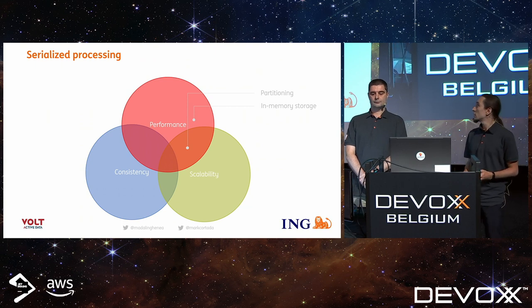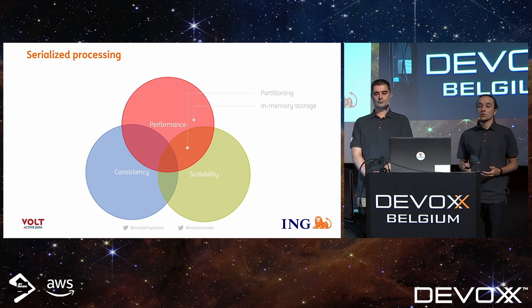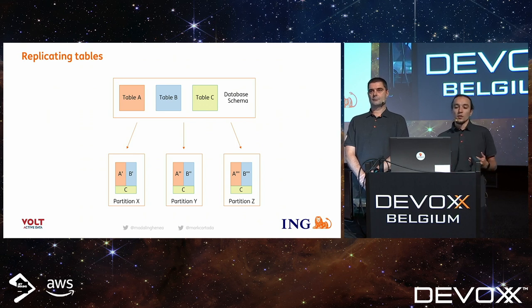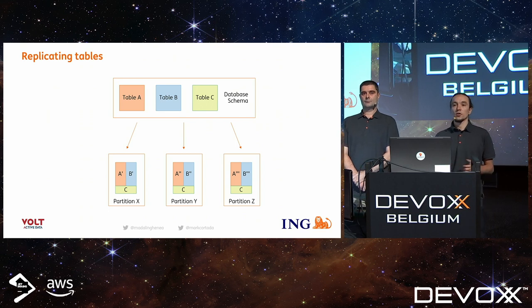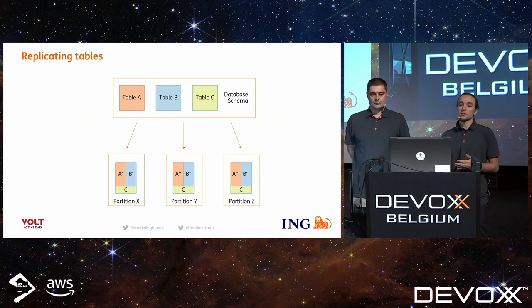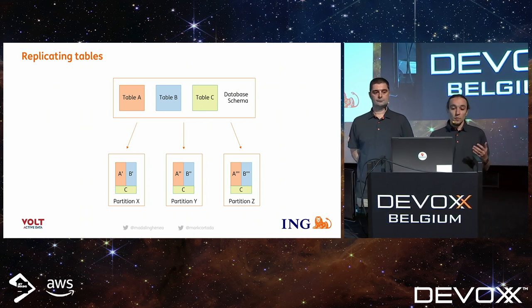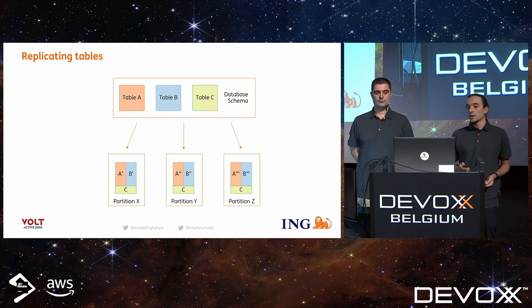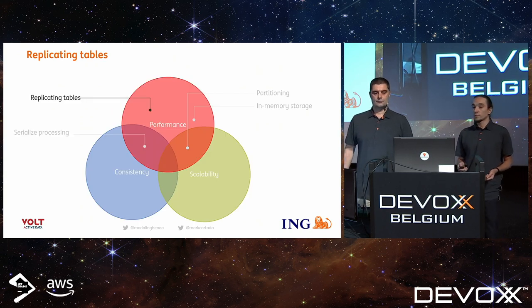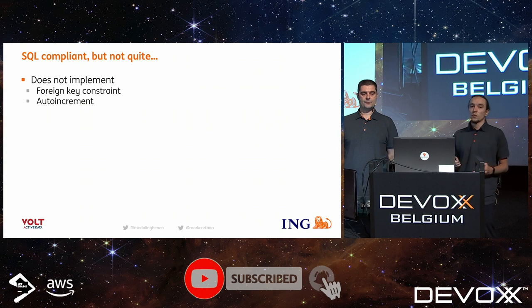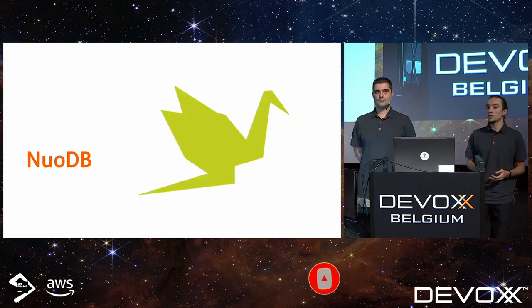By implementing this mechanism, VoltDB also achieves timestamp ordering, meaning older transactions have higher priority than newer ones. VoltDB does not need any locks, so there is no performance overhead from locking and deadlock is not possible. Serialized processing ensures consistency but also improves performance. Regarding table replication in VoltDB, tables can be replicated across all partitions for faster reads. Best candidates are tables with many reads and very few writes — table replication improves performance. Note that VoltDB does not implement foreign key constraints or auto-increment, so if you need those features, VoltDB may not be the best choice.